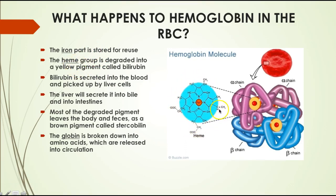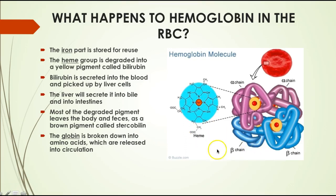When a red blood cell is destroyed, its hemoglobin is broken down. The iron at the center of the heme group is stored for reuse. The remaining heme components are degraded into a yellow pigment called bilirubin, which is secreted into the blood, picked up by the liver, secreted into bile and then the intestines, and ultimately leaves the body in feces as a brown pigment called stercobilin. The polypeptide chains (alpha and beta chains) are broken down into amino acids and released into circulation.